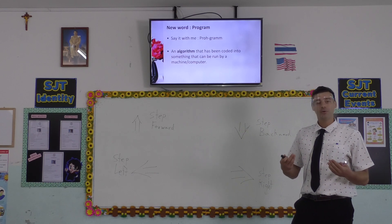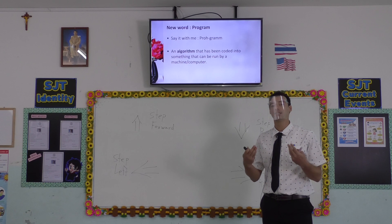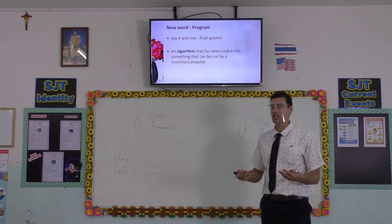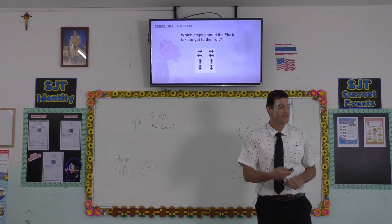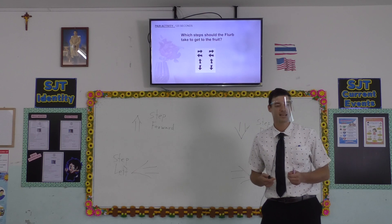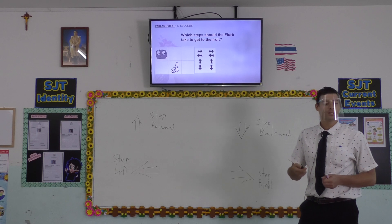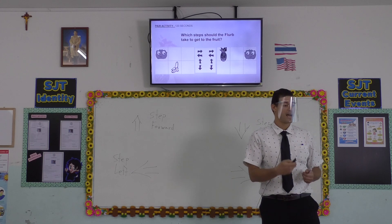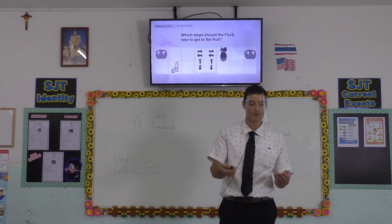So let's have an activity in your notebooks. In pairs, I want you to get Flerb to the fruits. So I want you to write your algorithm. Take three minutes.